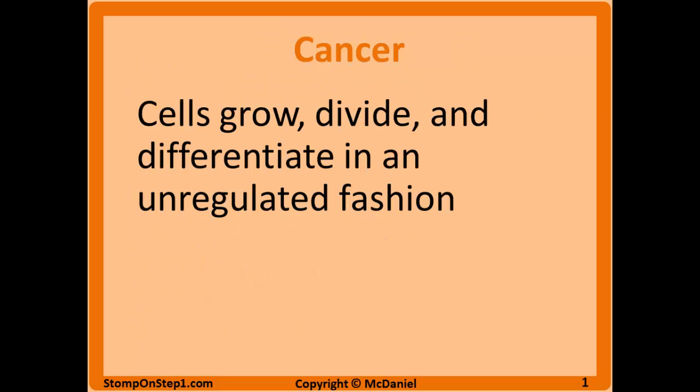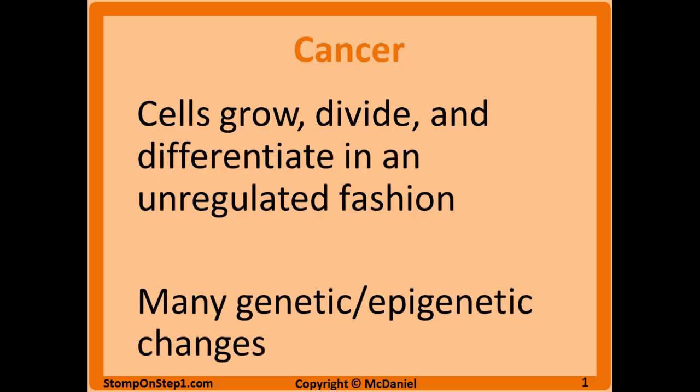Generally speaking, cancer is going to be when cells grow, divide, and differentiate in an unregulated fashion. This cancerous tissue grows faster than the surrounding normal tissue, and this usually results in some sort of mass forming. The pathway that develops cancer has many genetic and/or epigenetic changes. Cancers usually start as a single mutated cell, which then proliferates and results in an early mass of identical cells called a clonal population.